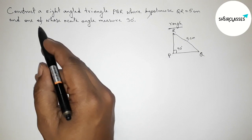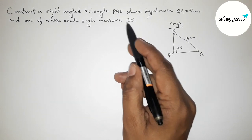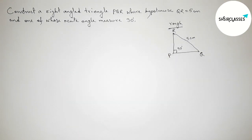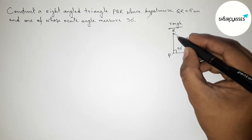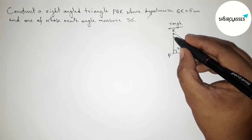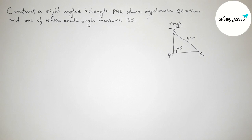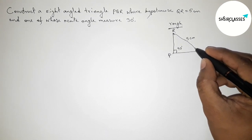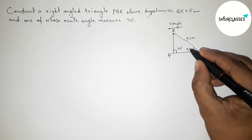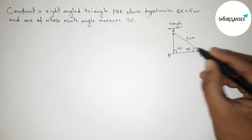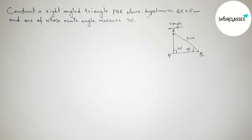One of whose acute angles measures 30 degrees. In this case we can take angle Q as 30 degrees or angle R as 30 degrees. Here I am going to take angle Q as 30 degrees — you can take angle R equals 30 degrees as your choice.